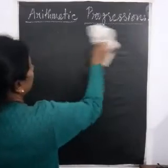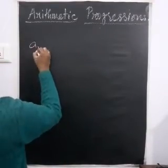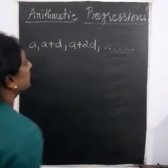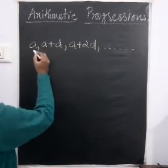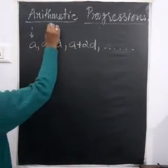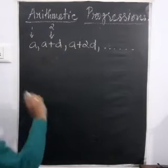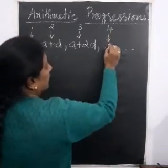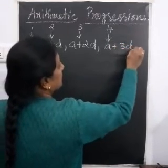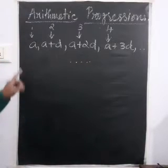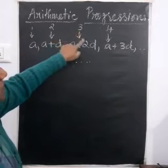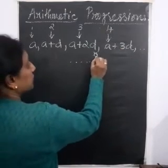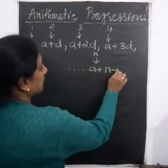Now let us go to the general form of an AP. The general form of an AP can be given as: A, A plus D, A plus 2D, etc. The first term is denoted by A. The second term is A plus D — we are adding the first term and the common difference. The third term is A plus 2D, and the fourth term will be A plus 3D. In the second term there is 1D, in the third term there is 2D, in the fourth term there is 3D — one less than the term number. So in the nth term, we have A plus (N minus 1)D.